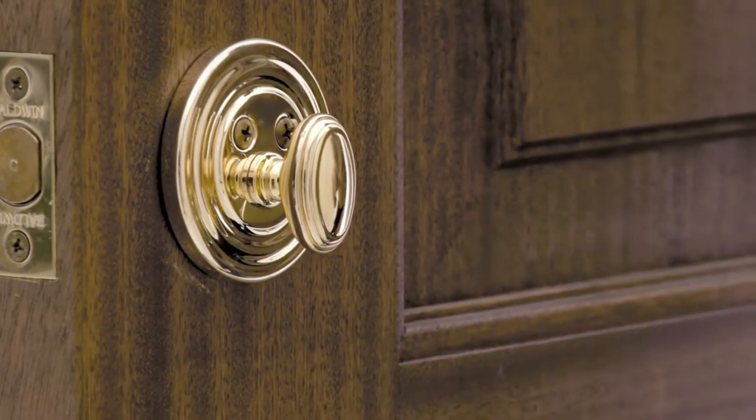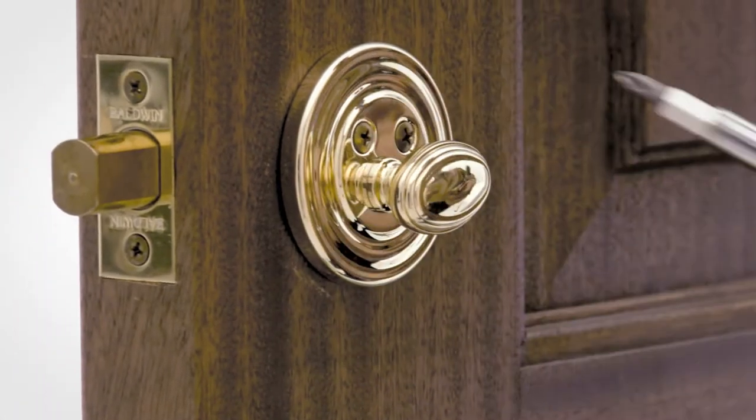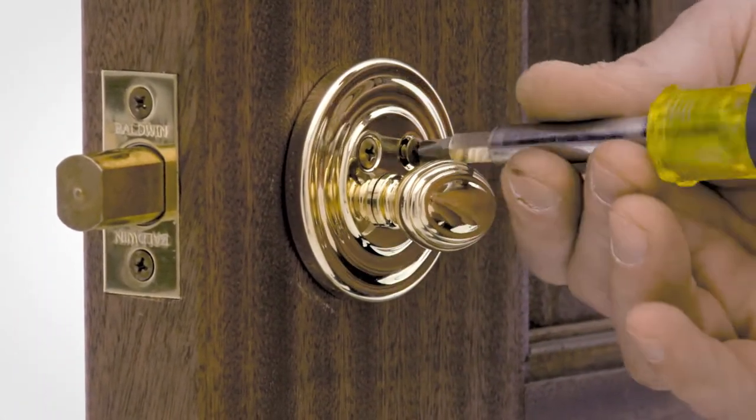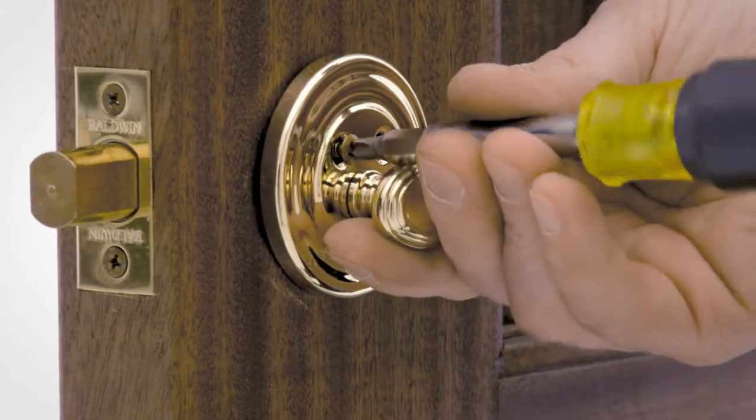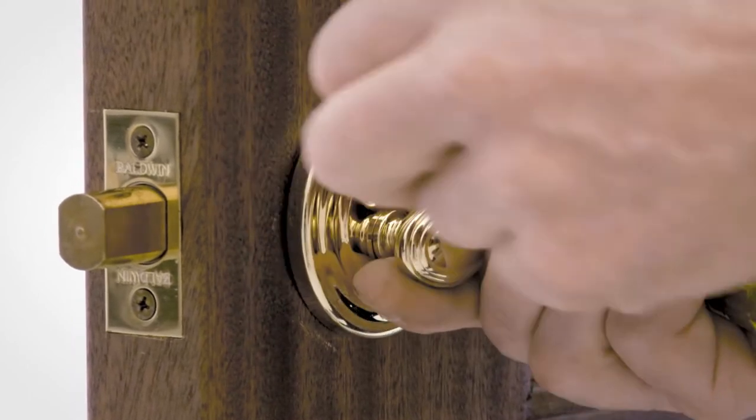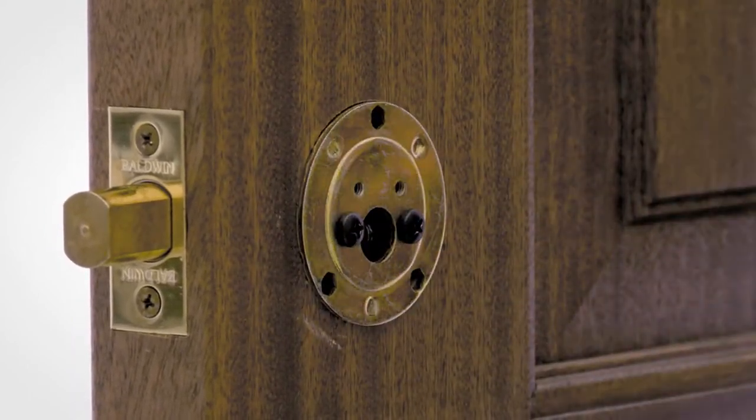Next, for a single cylinder escutcheon trim, extend the deadbolt and remove the 8-32 by 5/8 inch oval head screws. Secure the inside turnpiece and remove assembly. For a double cylinder, simply unscrew the inside cylinder collar and remove it.